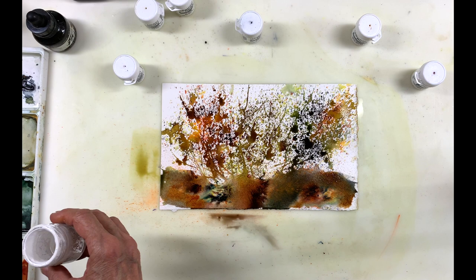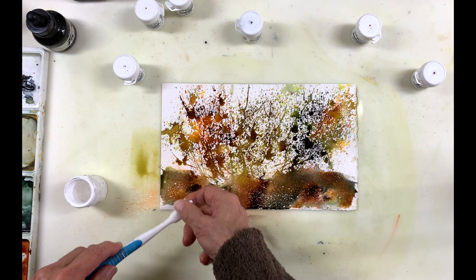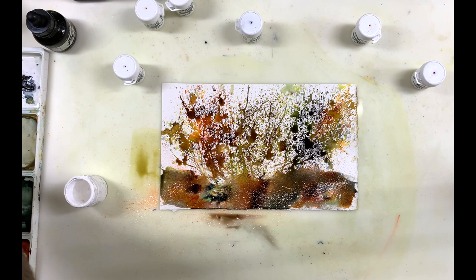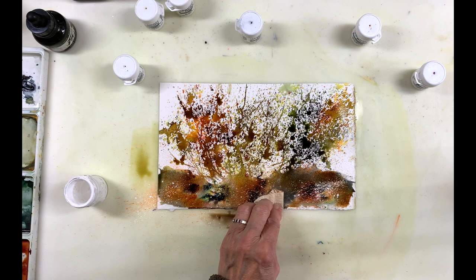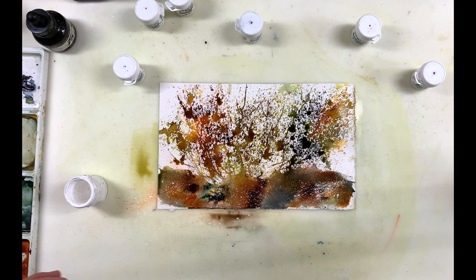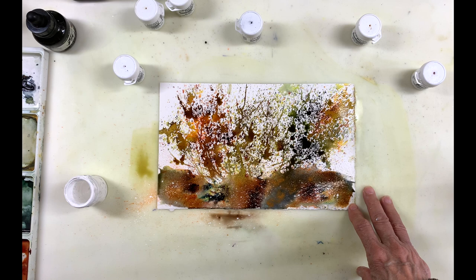And I'm going to take some Dr. PH Martin's bleed proof white and do the same with the toothbrush. And I probably spat on too much white, so I'm just going to lift some of it. And basically I'm just doodling here and I'm trying to see what type of effects I can get with the brusho. And it's a lot of fun to just experiment like this. And this is what you have to do to learn about these different mediums that you can use with watercolors.